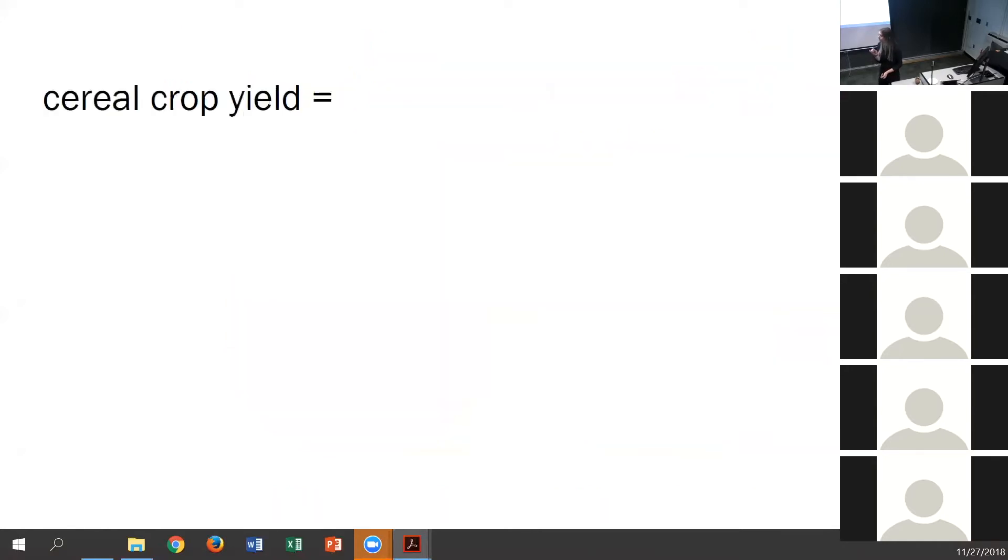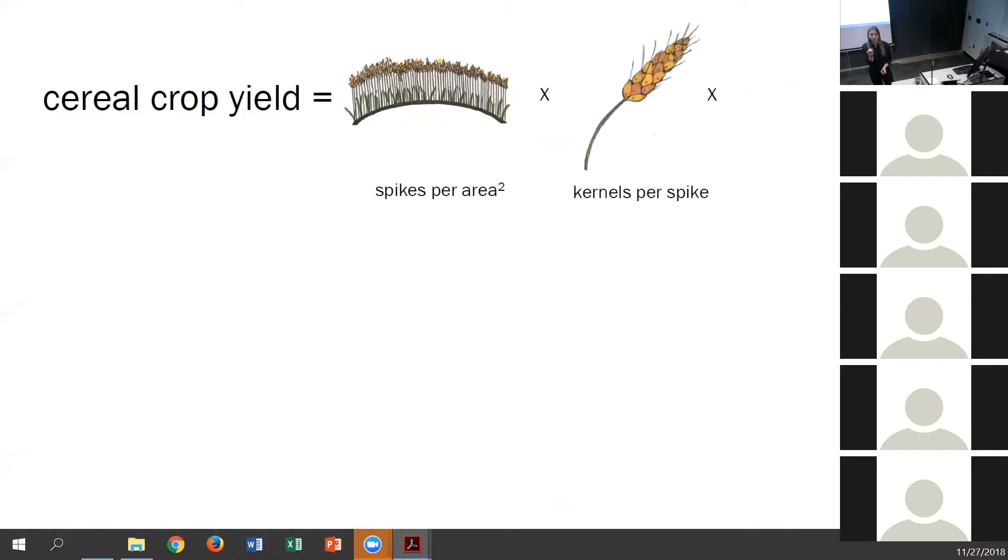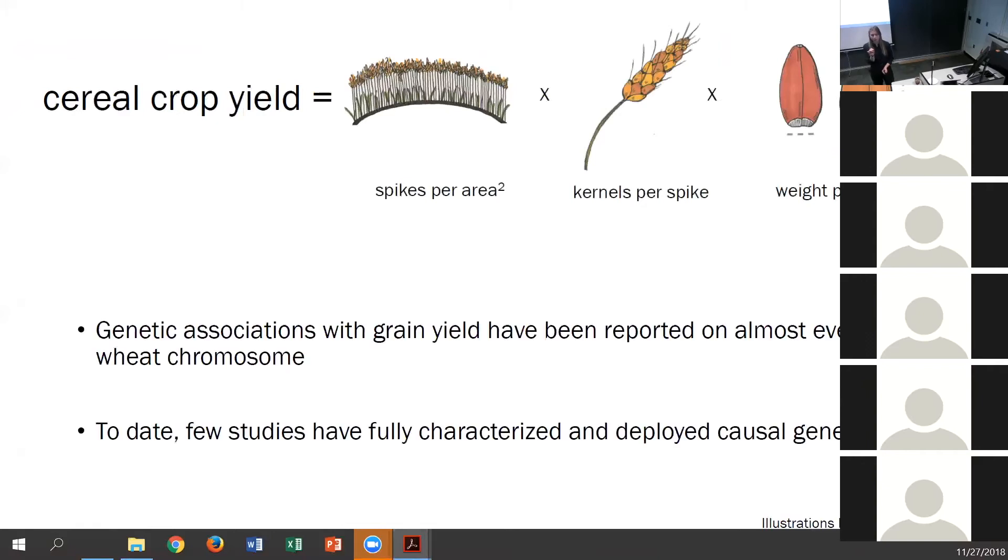Cereal crop yields can simply be modeled as the spikes per area by the kernels per spike and by the weight per kernel. And considering the economic importance of yield, there have been countless genetic associations looking into these different yield components. But there's been less success in actually identifying the causal variants and implementing them in elite varieties.